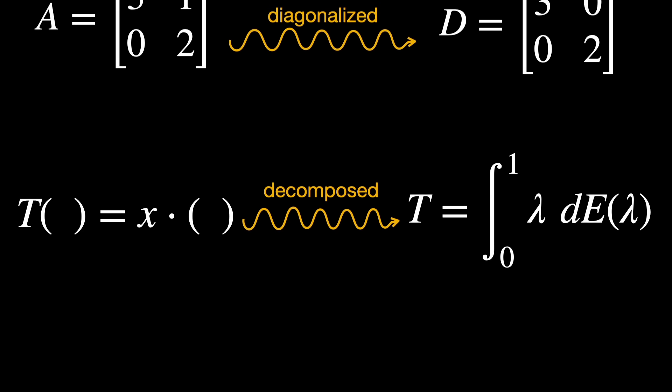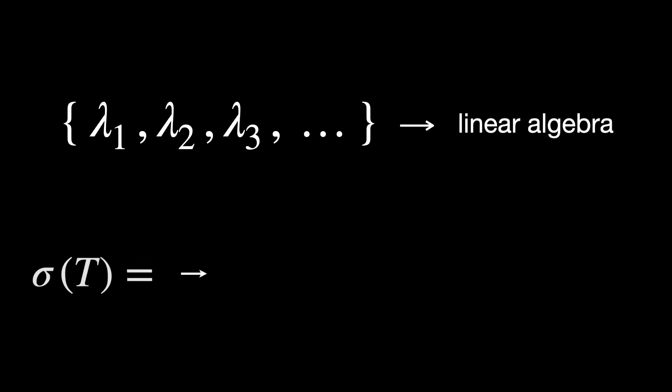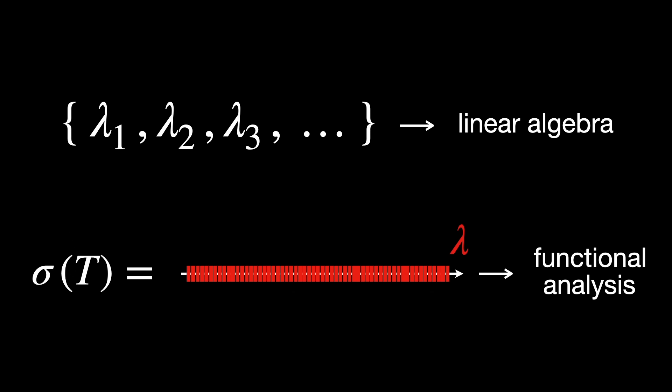But now, eigenvalues might form a continuous spectrum, and eigenvectors might not exist in the usual sense. And that's exactly why students find functional analysis, and as a consequence, operator theory, so confusing. It's really difficult to grasp the idea of transferring from discrete to continuous spectra. Plus, it's really challenging to visualize the continuous analog of projections onto eigenspaces.